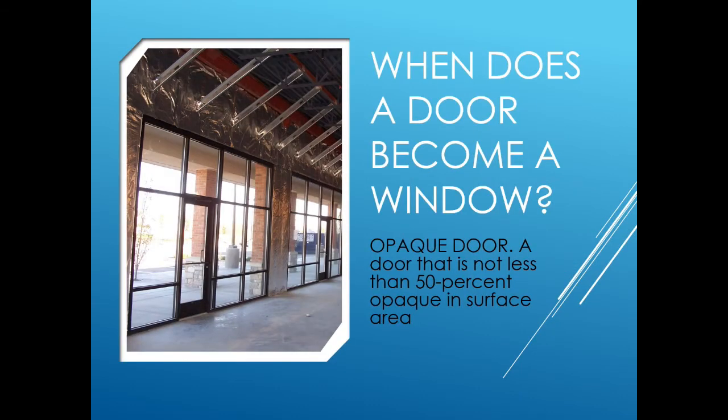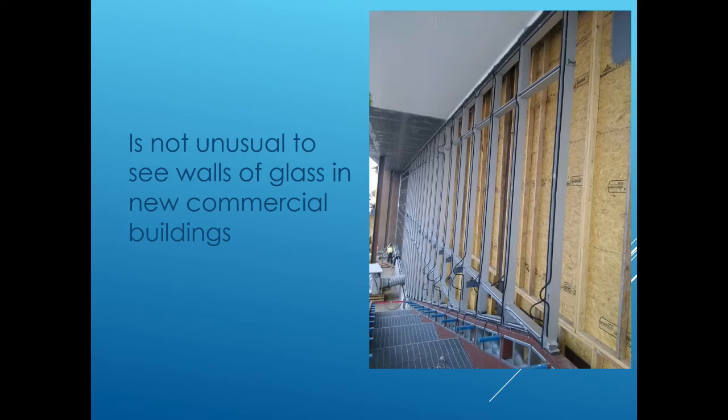When does an opaque door become a window? The IECC defines an opaque door as a door that is not less than 50 percent opaque in surface area. If a door is more than 50 percent glass, it is considered a window and must meet all the window U-factor and solar heat gain coefficient requirements in table C402.4.